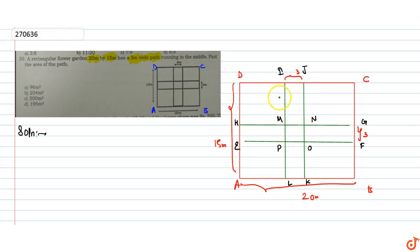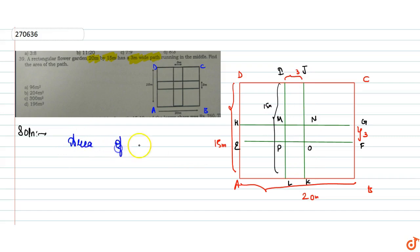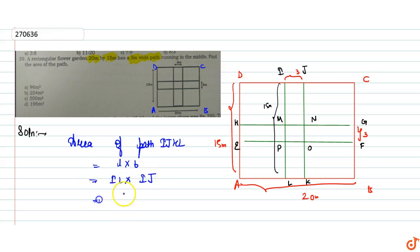We have the area of the path. For path IJKL, area equals length into breadth. The length IL is 15 meters and the width IJ is 3 meters. So the area of path IJKL is equal to 15 into 3, which gives us 45 meters squared.